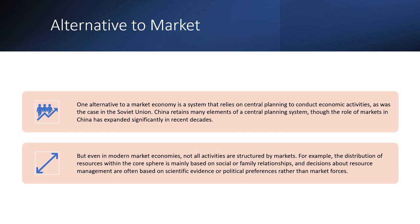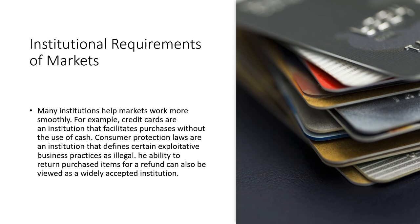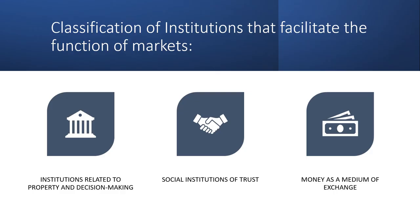But even in modern market economies, not all activities are structured by markets. For example, the distribution of resources within the core sphere is mainly based on social or family relationships, and decisions about resource management are often based on scientific evidence or political preferences rather than market forces. An institution refers to a formal or informal rule that structures human interactions — including laws, customs, norms, routines, and operating procedures — encompassing everything from a national constitution to table manners. Many institutions help markets work more smoothly; for example, credit cards facilitate purchases without cash, consumer protection laws define certain exploitative business practices as illegal, and the ability to return purchased items for a refund is a widely accepted institution. Classifications of institutions that facilitate markets include those related to property and decision-making, social institutions of trust, and money as a medium of exchange.